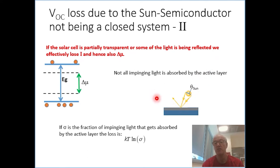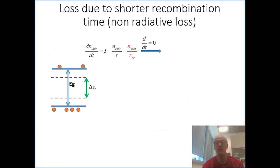So only part of the light is really being absorbed in the device. And as before, if you want to know what voltage loss in terms of open circuit voltage this corresponds to, you plug in the ratio of loss and you get how much you lost in terms of open circuit voltage. The same goes for radiative and non-radiative recombination.